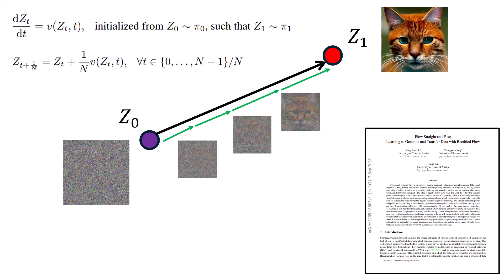Papers like DDIM or the probability flow ODEs of Song et al. define some transition that can be generalized and written as Xt being a linear combination of X0 (the noise image) and X1, with weights alpha_t and beta_t which should be differentiable. If we differentiate this Xt with respect to t, since alpha_t and beta_t are non-linear, we end up getting a curvature instead of a single line.